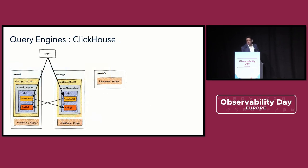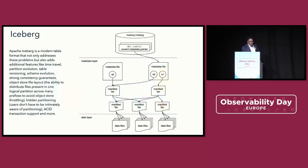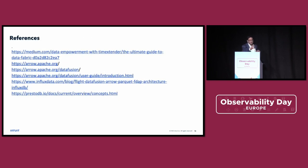Clickhouse is another key component that can be very useful. Velox is a pluggable C++ engine that supports Arrow and works well, particularly for Java processing workloads. Iceberg, as I mentioned, works very well for metadata handling. Putting it all together, this is the Intuit case study: there are different domains — analytics, data, and federated queries. We've gone more with the Presto approach, but you can also use the data fabric approach with Arrow. I've shared some interesting references already uploaded to the site, and I'll upload the updated slides right after this session. I hope you found it useful — thanks a lot.